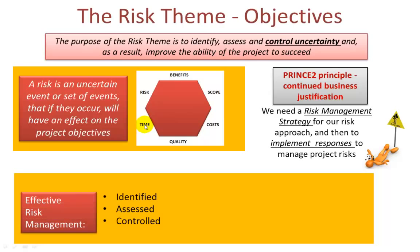So what do we need to do with risk? Effective risk management means identifying all known risks at any given point in time, then assessing the risk and taking some form of actions — in other words controlling the risk and making sure those actions are having the desired effect. We also need to generate a risk management strategy which describes our risk approach and then implement responses to manage project risks. The risk management strategy is a how-to; every project is different and we need to set out a clear approach to manage the risks within a given project.